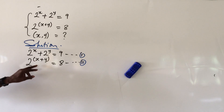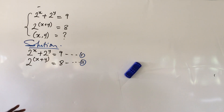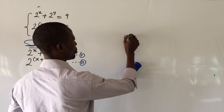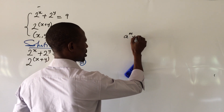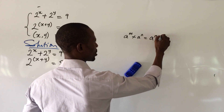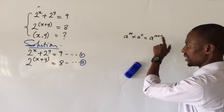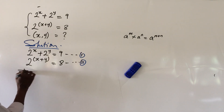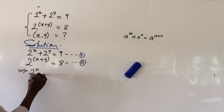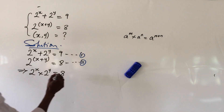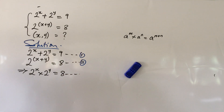We can rewrite equation two in another format. According to the law of indices, if you have a to the power of m times a to the power of n, this equals a to the power of m plus n. The expression in equation two is the same thing, so opening it gives us: two to the power of x times two to the power of y equals eight. Let's label this equation three.